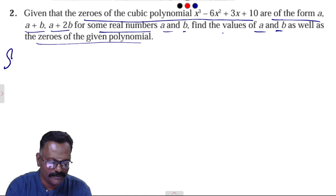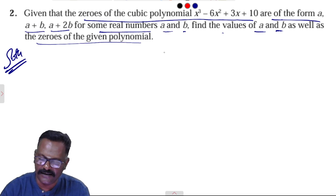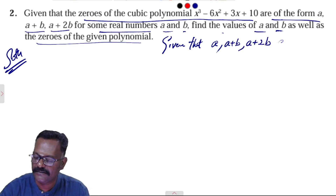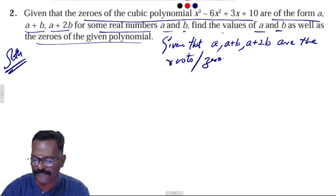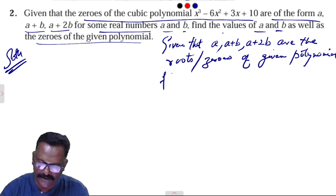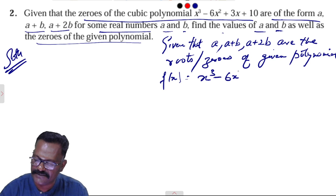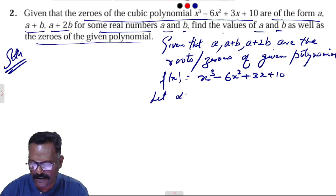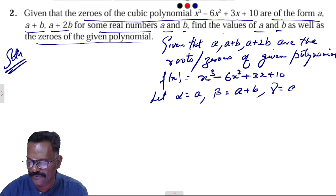Solution: Given that a, a plus b, a plus 2b are the zeros of the given polynomial. The polynomial is f(x) equal to x cube minus 6x square plus 3x plus 10. Let alpha equal to a, beta equal to a plus b, gamma equal to a plus 2b.